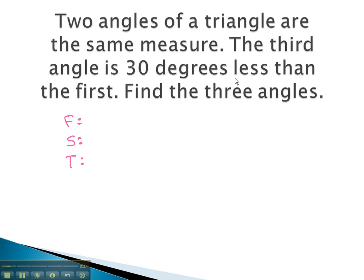First, we are told that two angles of a triangle are the same measure. Let's make that the first and the second. We'll label them both as x, showing that they are both exactly the same measure.